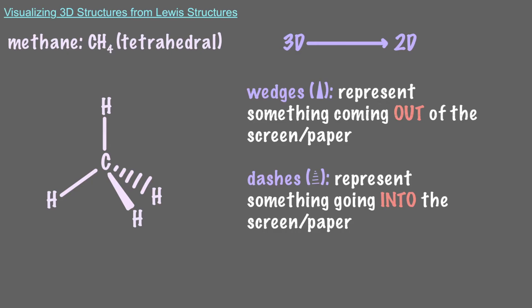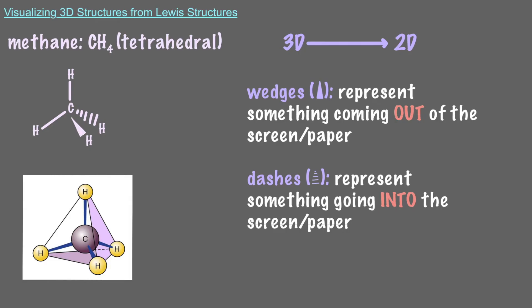Since the hydrogen on the wedge is coming out of the screen and the one on the dash is going into the screen, the overall shape of methane, or any molecule with a tetrahedral shape, looks like this, with each terminal atom being on each of the four vertices.